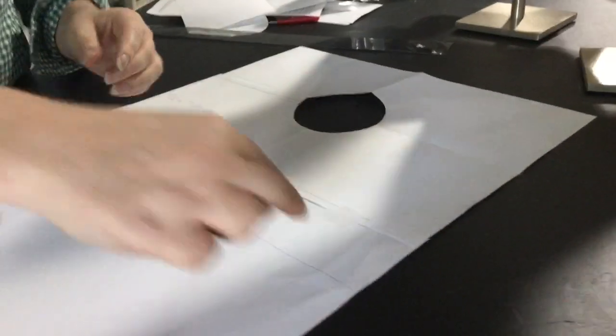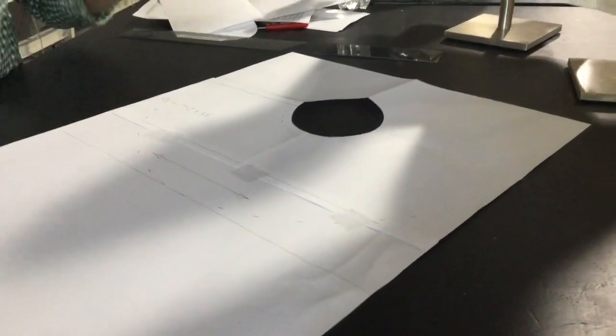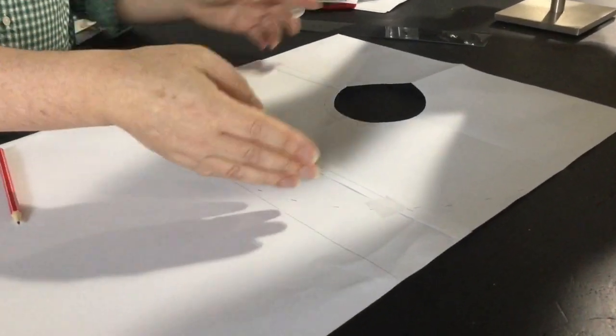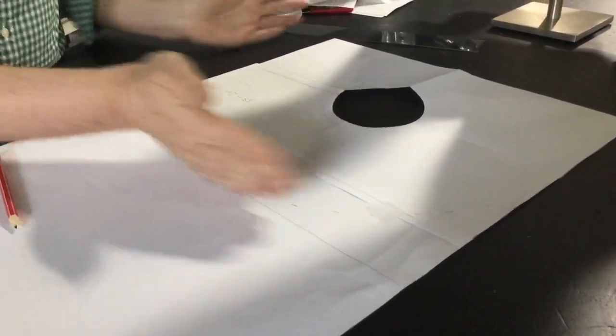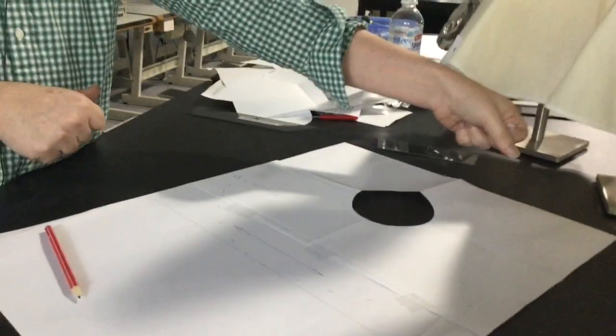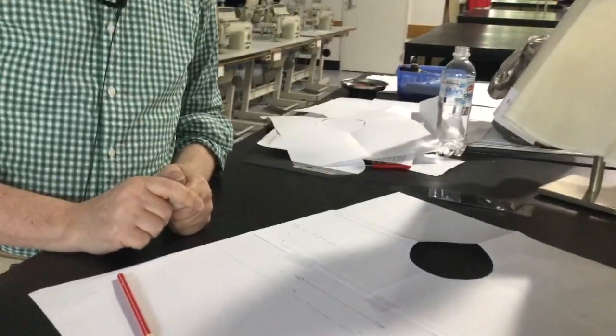Or you could even do it so that maybe two of your corners - like these two corners - you actually cut the circle off, and these two corners you leave the point. So you can play with that aspect of it as well.